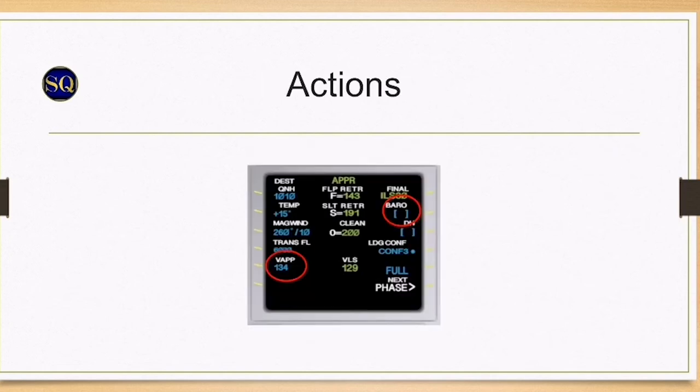Do not insert the MDA or MDH into the performance approach page on the MCDU as this will give false automatic callouts of 100 above and decision height. The radio altimeter callouts remain accurate.